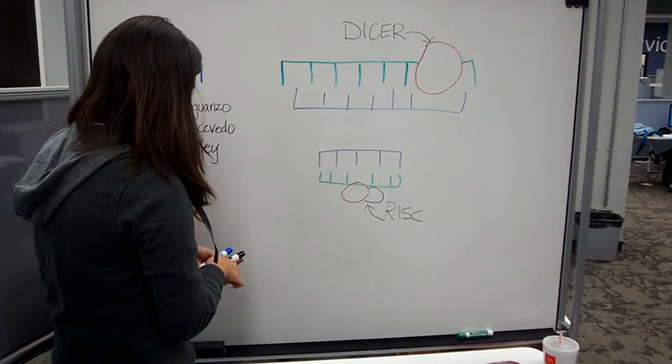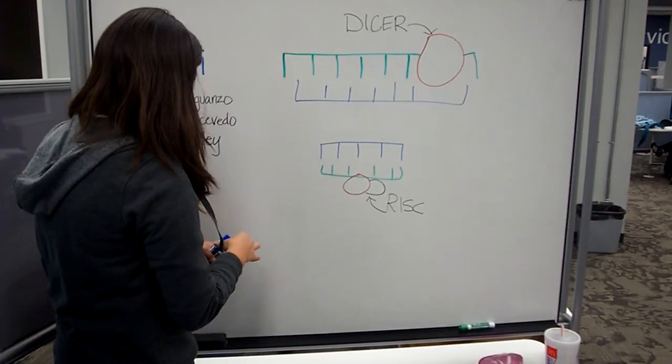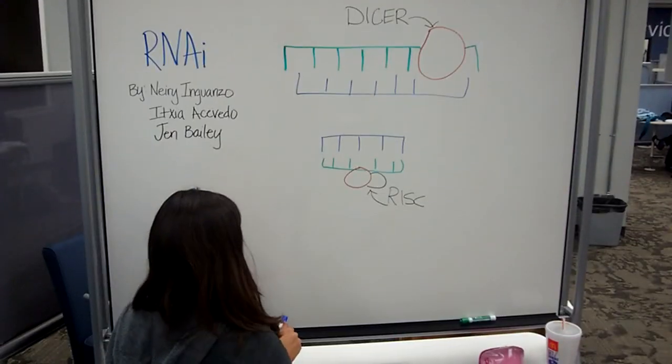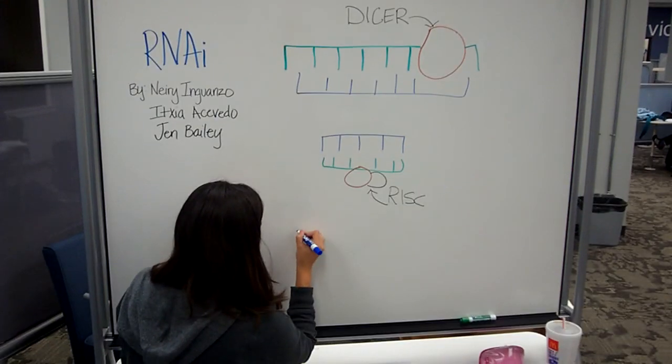The RISC complex is guided to endogenous mRNA with sequences homologous to the antisense strand of the siRNA.